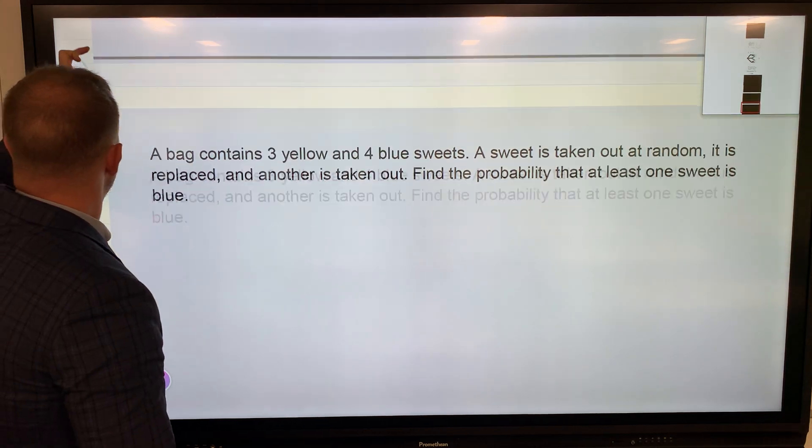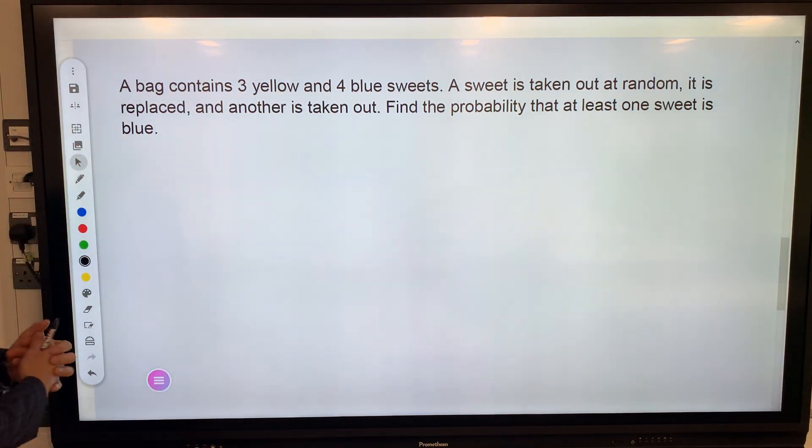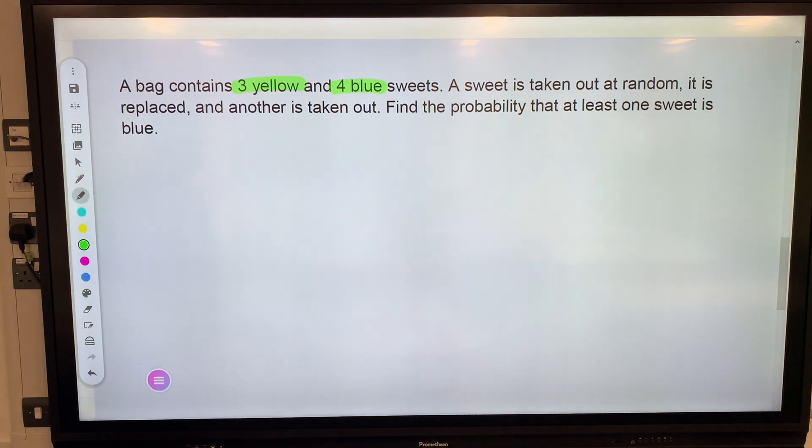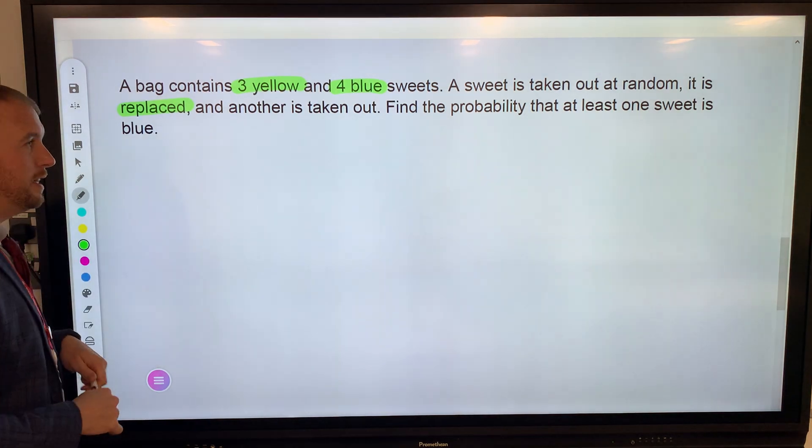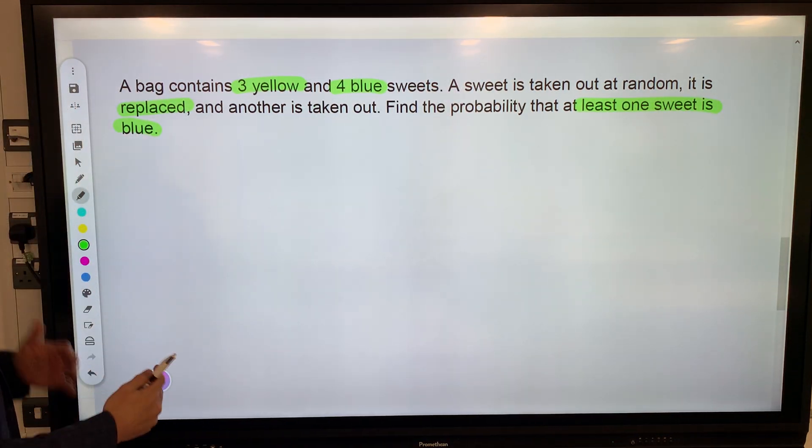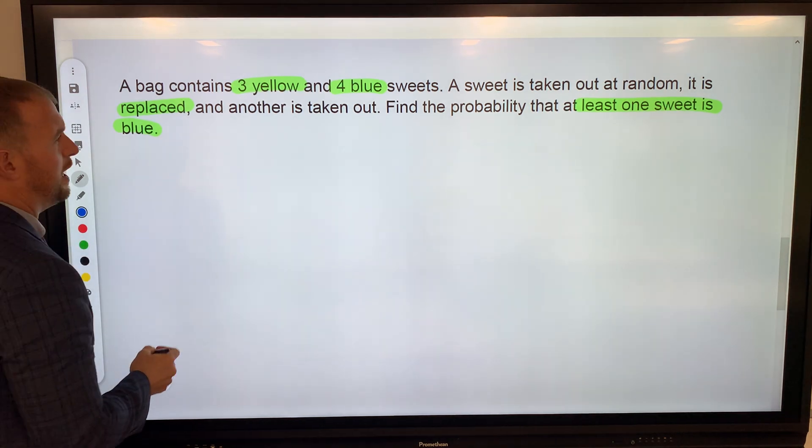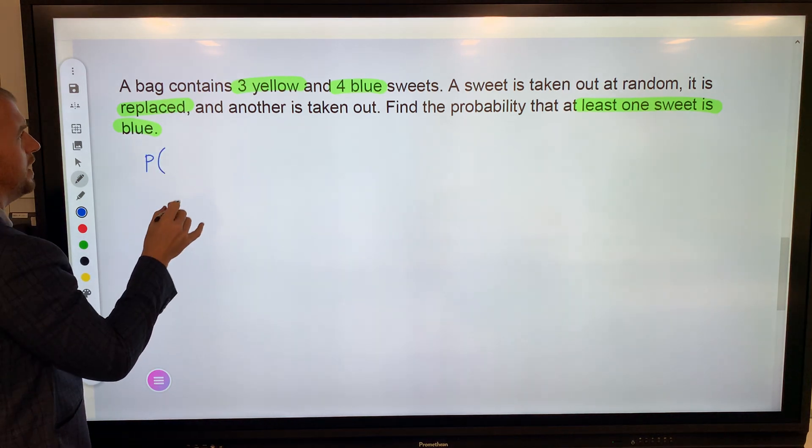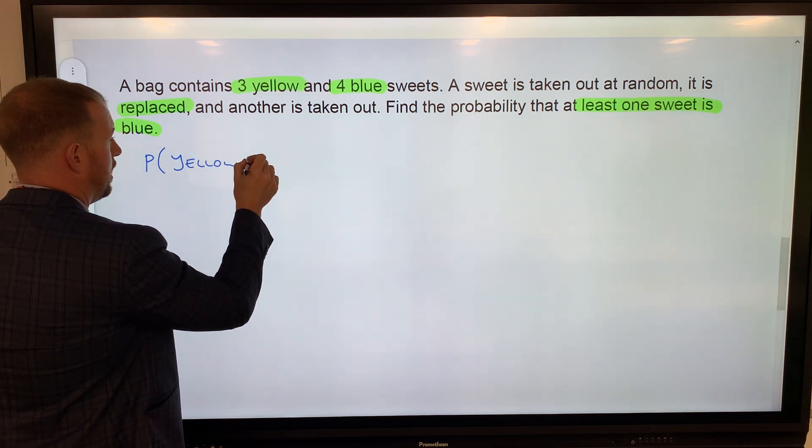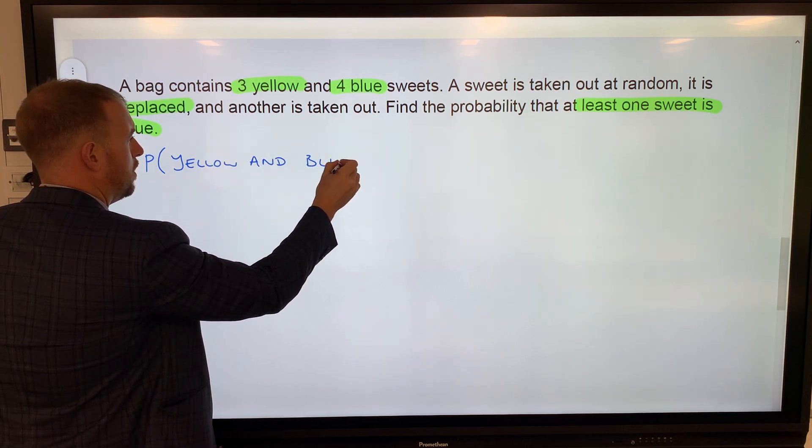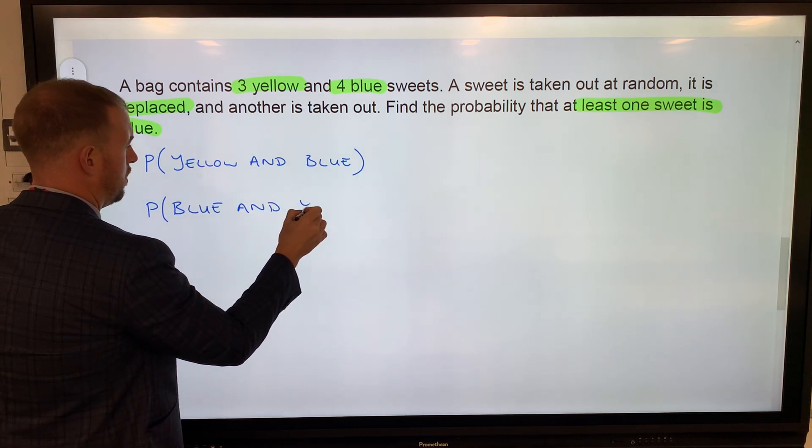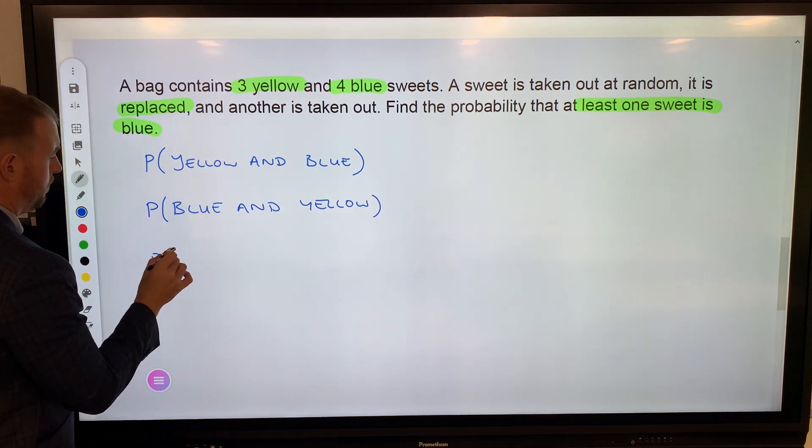A bit more difficult now, a more GCSE-style question. A bag contains three yellow and four blue sweets. A sweet is taken out at random, it is replaced, and another is taken out. Find the probability that at least one sweet is blue. We've got some different possibilities here.